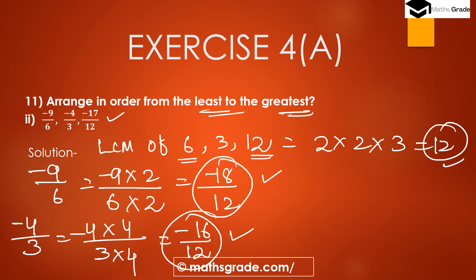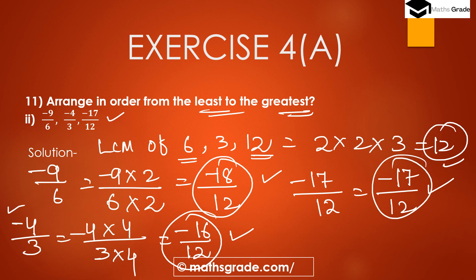For −17/12: the denominator is already equal to the LCM, which is 12. So we multiply both numerator and denominator by 1 — giving −17/12 as the equivalent rational number of itself. Now all three rational numbers have equal denominator 12: −18/12, −16/12, and −17/12.